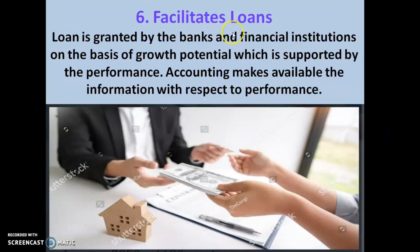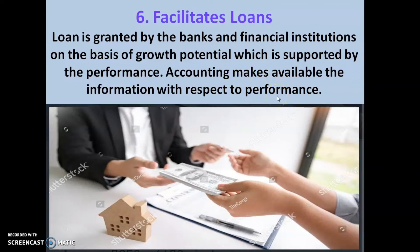The next point is facilitates loan. A loan is granted by banks and financial institutions on the basis of the growth potential, which is supported by the performance. A bank gives a loan to any organization only after inspecting the books of account — they want to know the growth potential as well as the performance of the company. When they inspect the accounting work of that organization, then only they will come to know about the performance and grant the loan. That is one advantage of accounting.